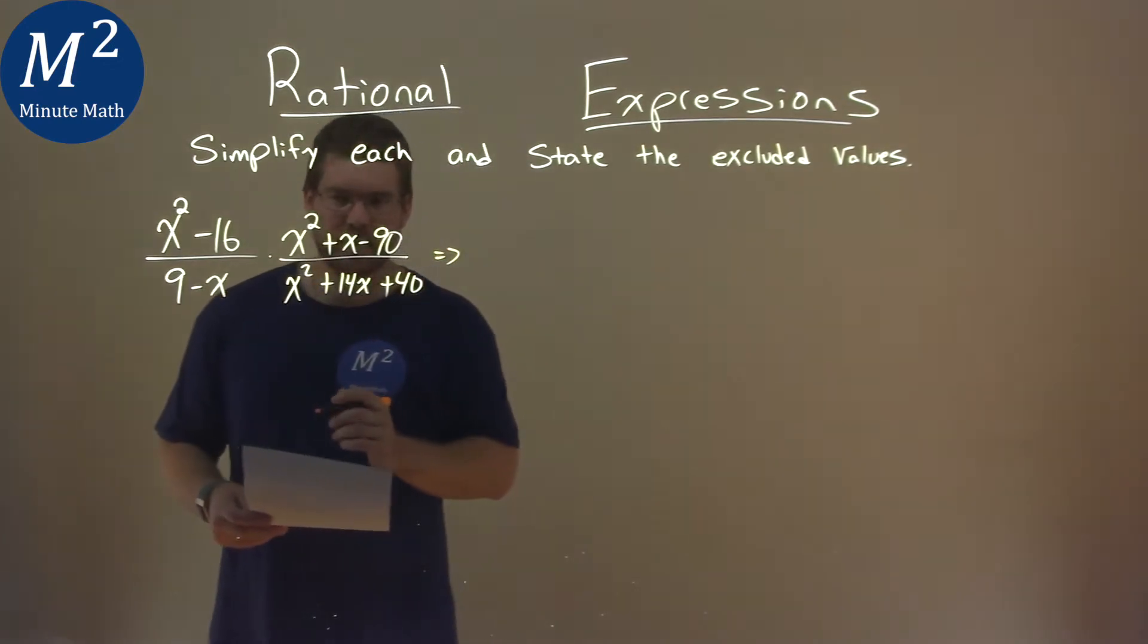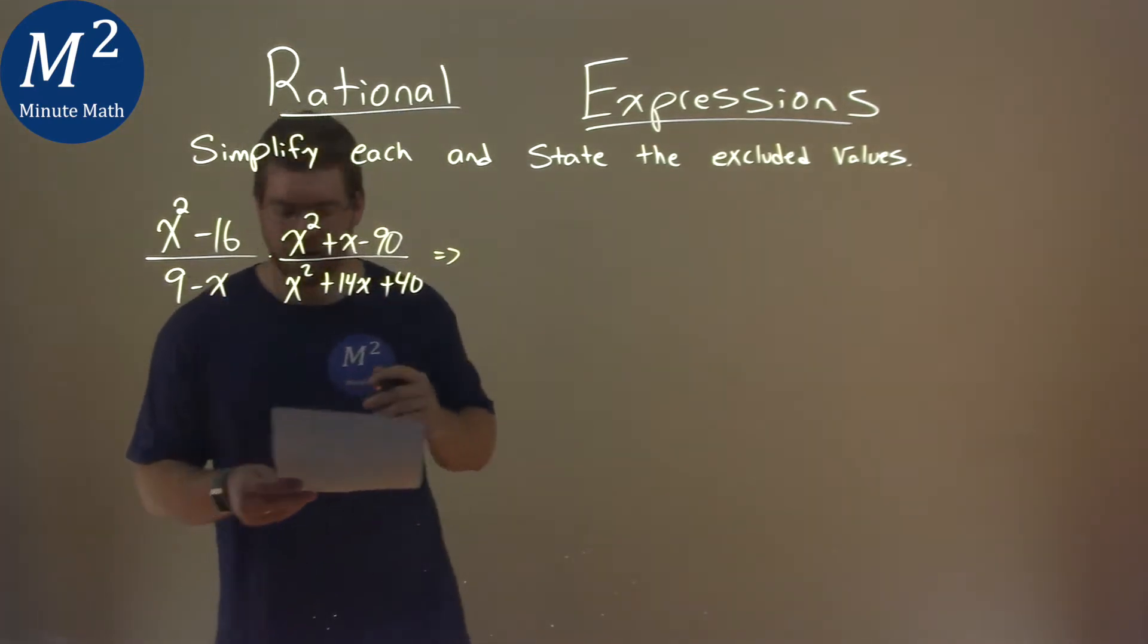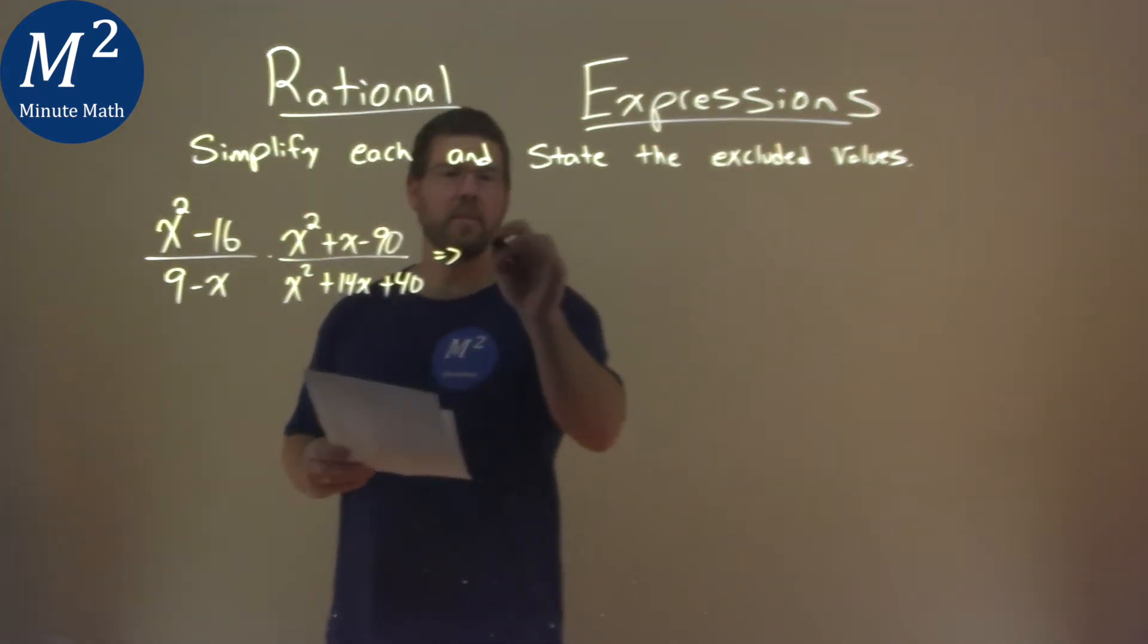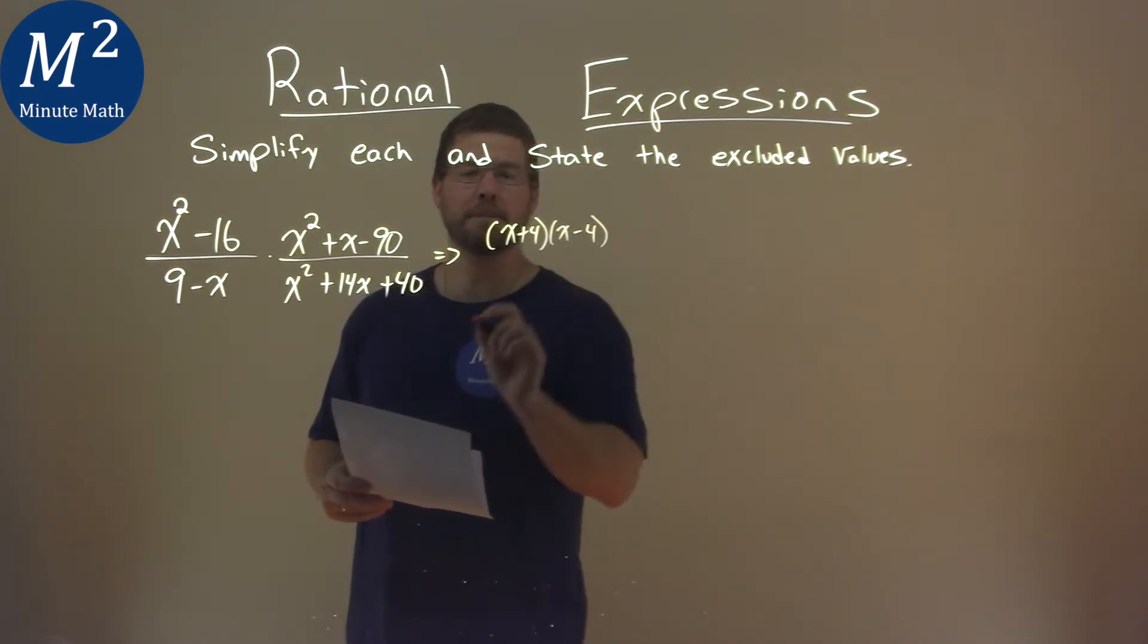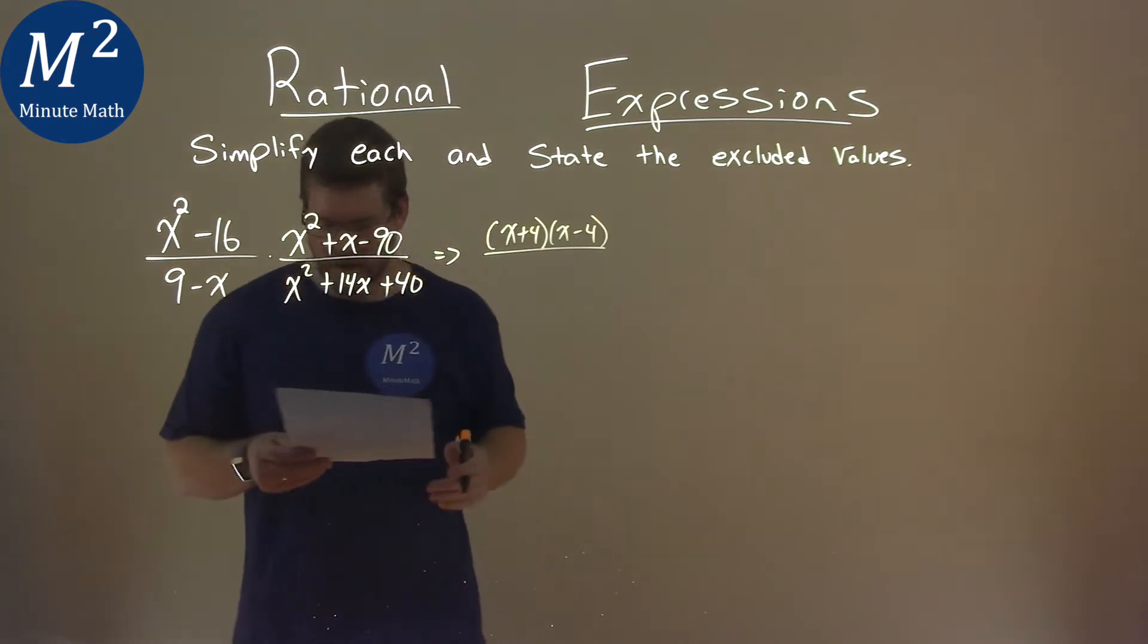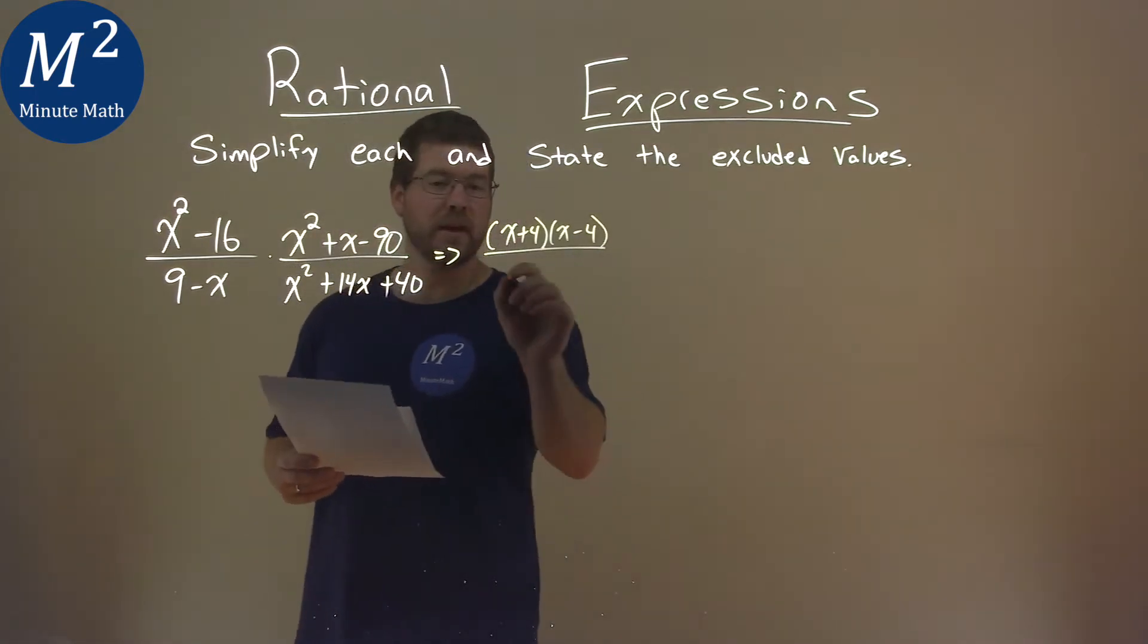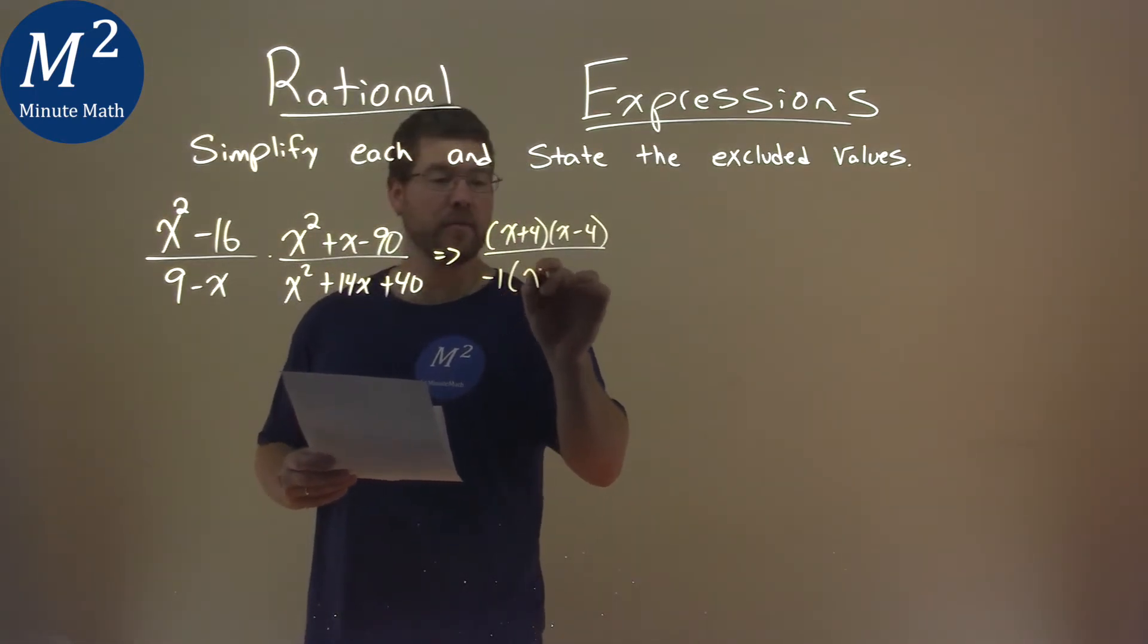Let's start factoring as much as we can. x squared minus 16 becomes x plus 4 and x minus 4, right? Denominator, that 9 minus x. If I pull out a negative 1, I'm left with x minus 9.